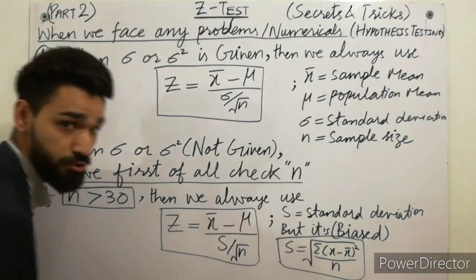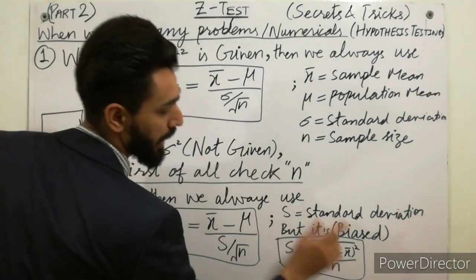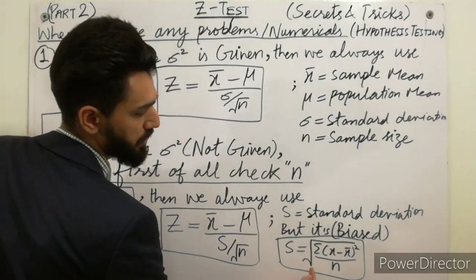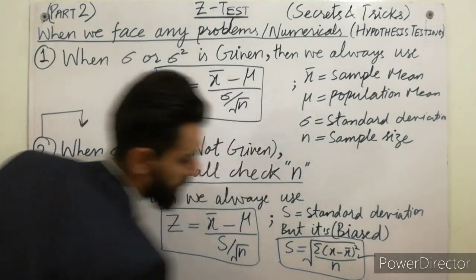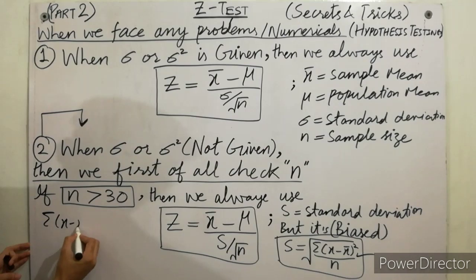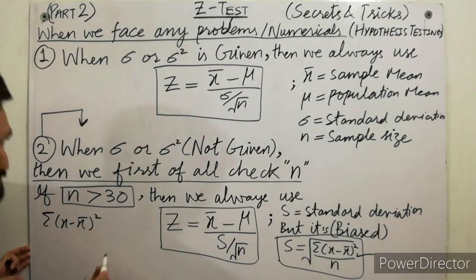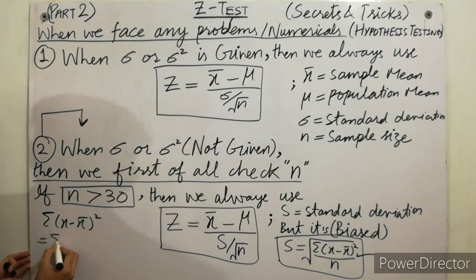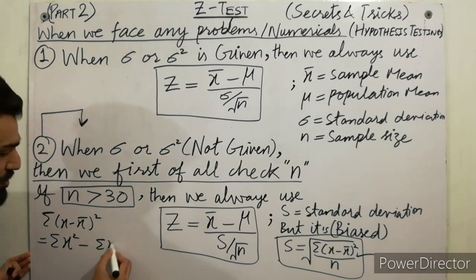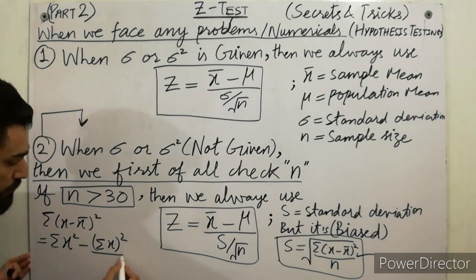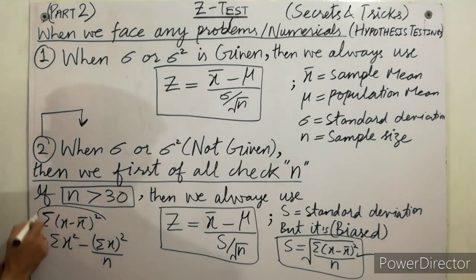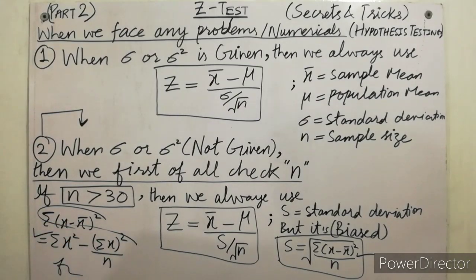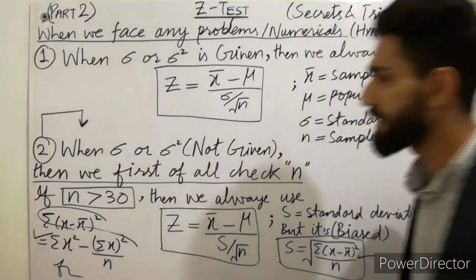Must remember: S is also standard deviation but S is biased. The formula is S = √(Σ(x − x̄)² / n). And this is also equal to √(Σx² − (Σx)² / n). You don't need to make a table to calculate that — just use this formula to calculate the value of Σ(x − x̄).